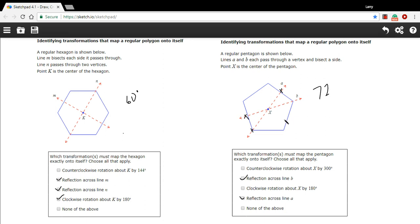So multiples of 72, if you rotate by multiples of 72 degrees, you'll get rotational symmetry. Is 300 a multiple of 72? Well no, it's not, so that's not going to work. Is 180 a multiple of 72? No, it's not, so that's not going to work.